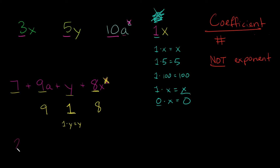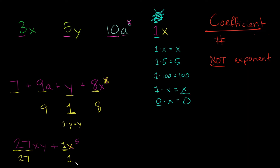One quick example: 27xy plus x to the fifth power. What are our coefficients? The big number next to the variables — 27 — that's a coefficient. And for x to the fifth, what's our coefficient? It's 1, because there is no coefficient written next to this variable. It doesn't matter if it's x, x to the fifth, or x to the thousandth power — if there is no coefficient next to it, it is always 1.